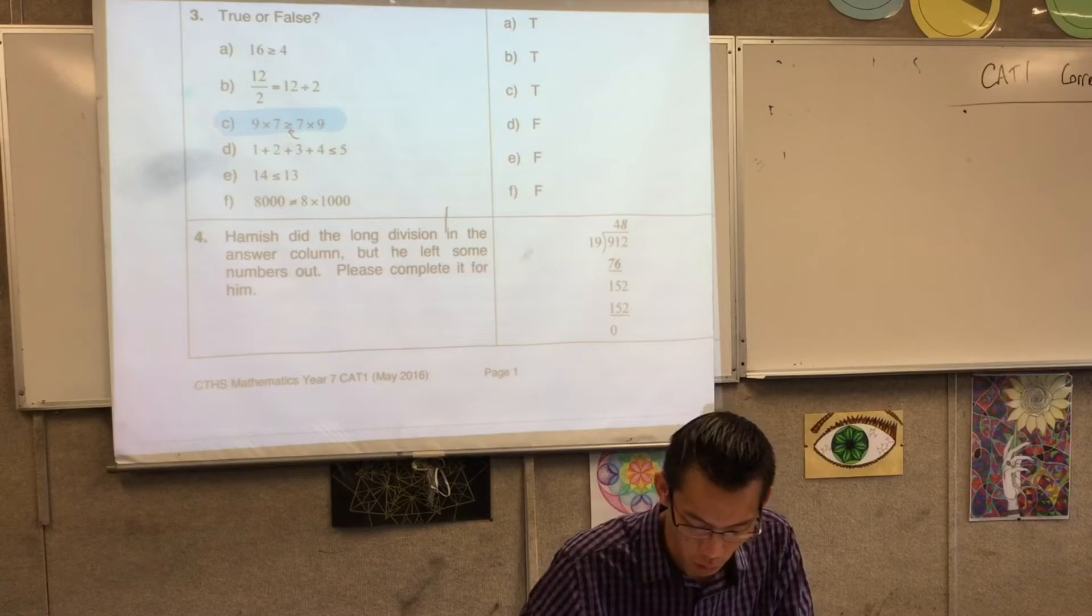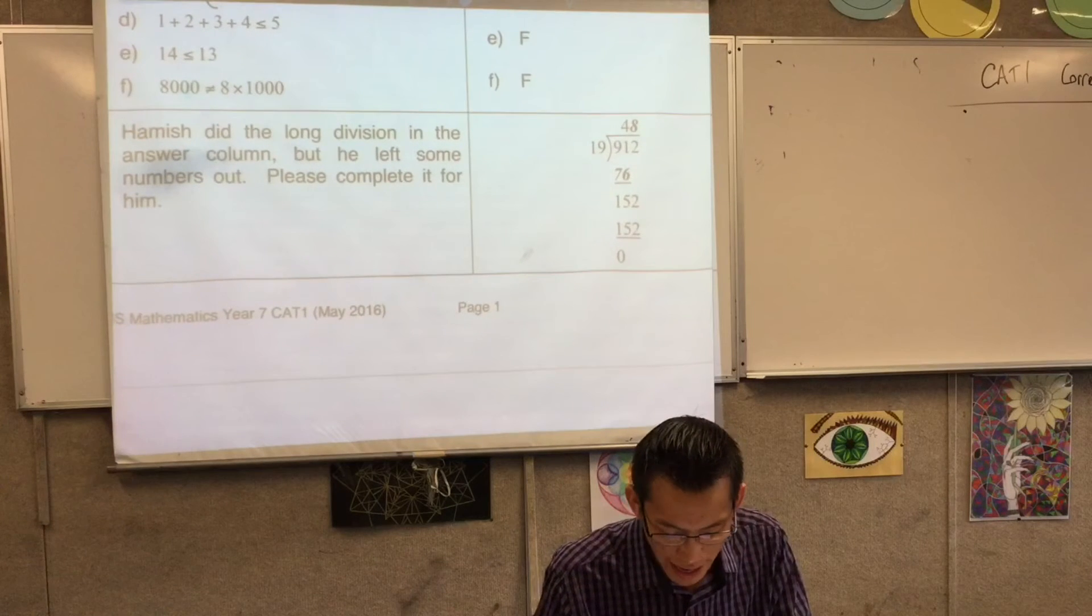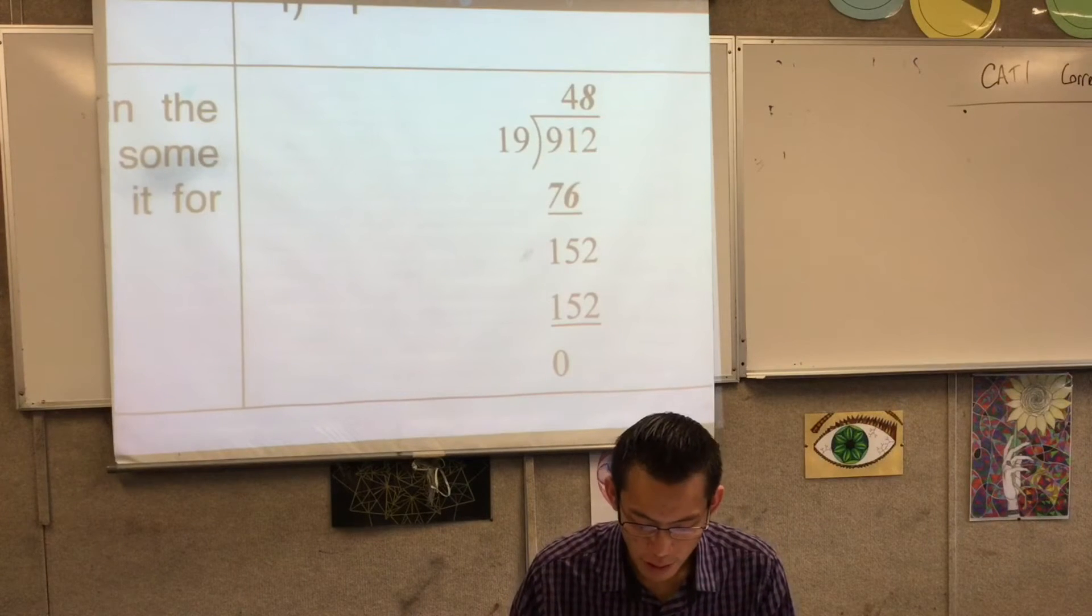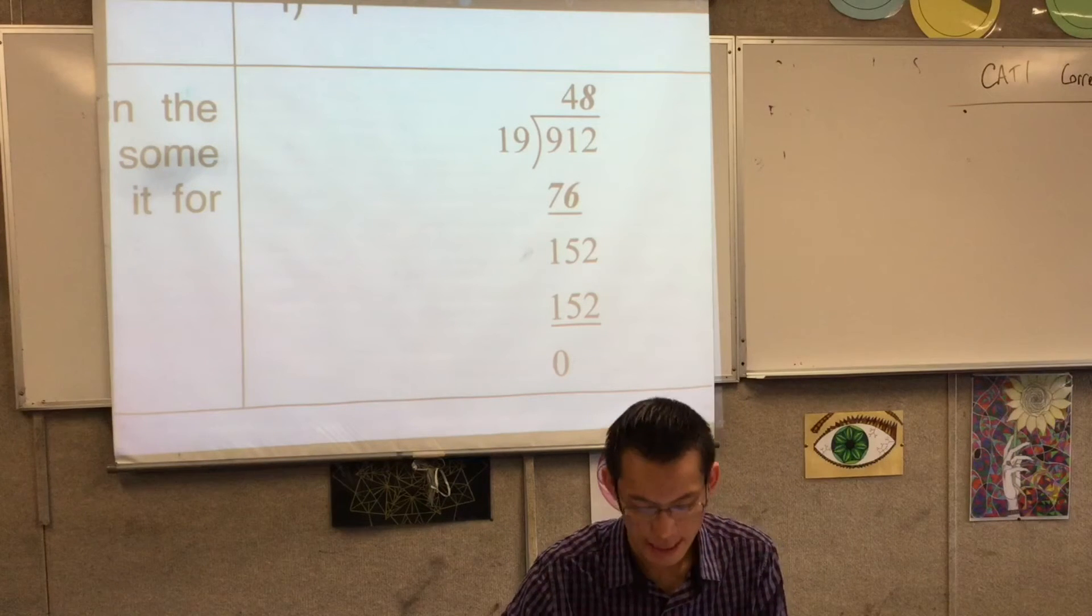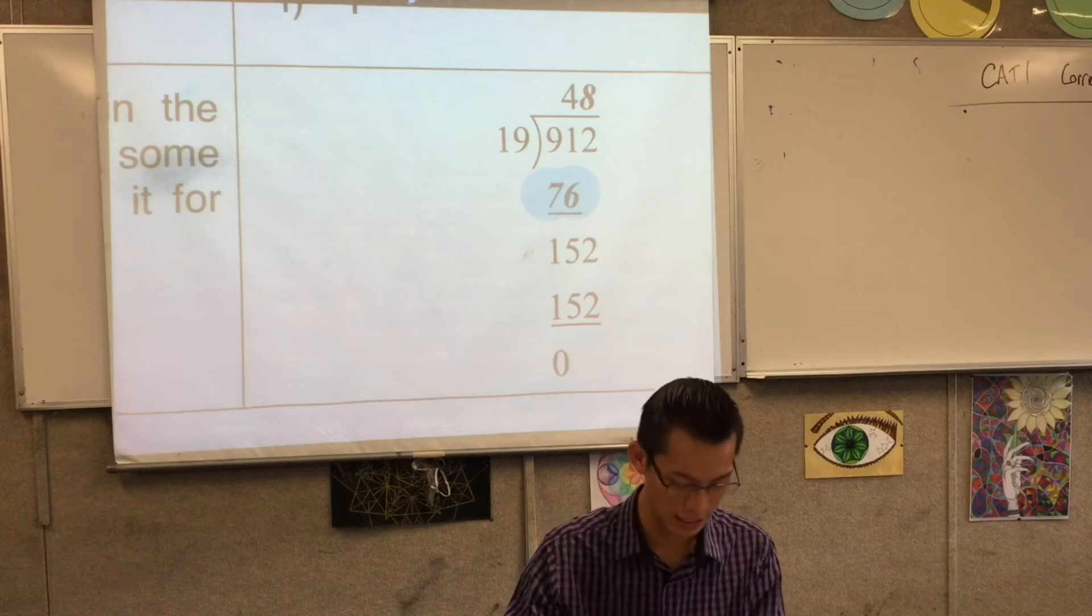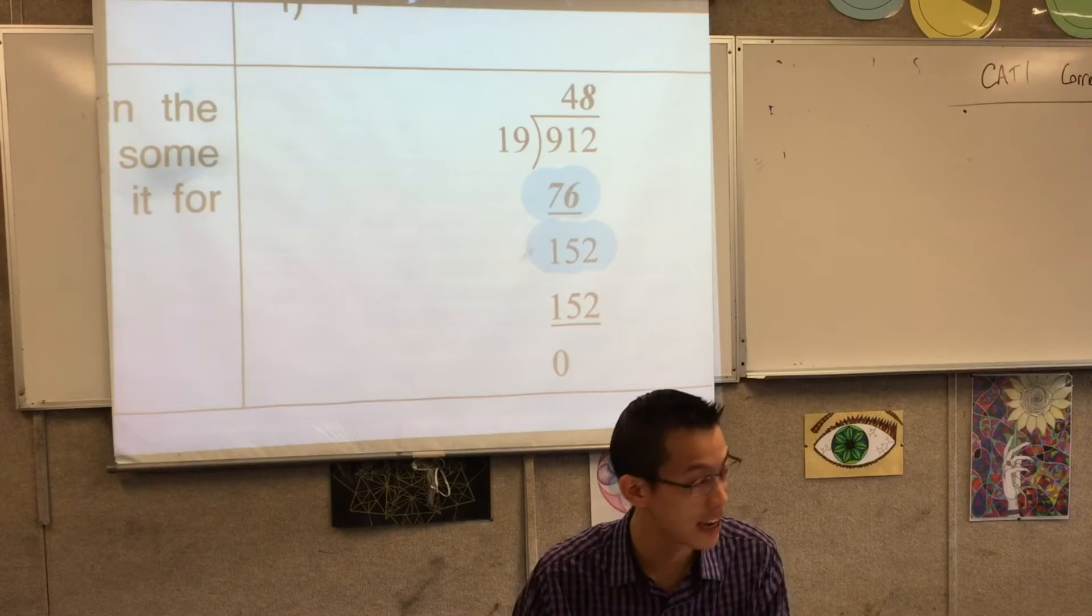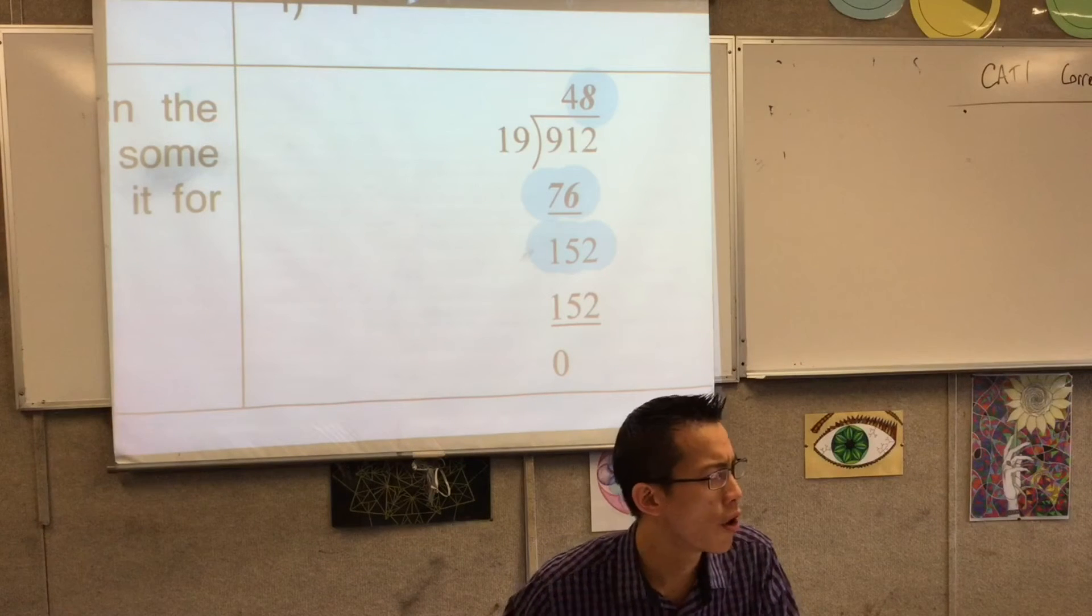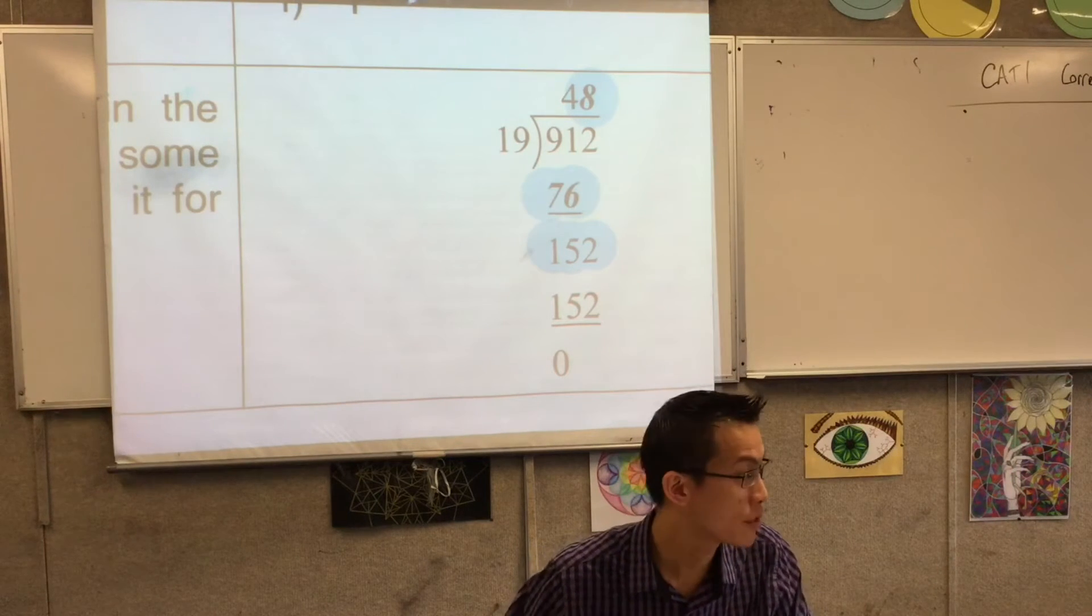I'm going to skip along to 4. You can see Hamish did the long division in the answer column, and the bold and italic numbers are the ones that have been filled in. You can see the 4 up the top is already there. So what do you do with that 4? You multiply it by 19. That's what gives you the 76 that belongs there. And then you continue through, and you can see where the rest of this goes from. 91 take away 76 gives you the 15, and then you bring down that 2. But then you write this last number, 8, because 19 goes into 152 eight times. Perfect.